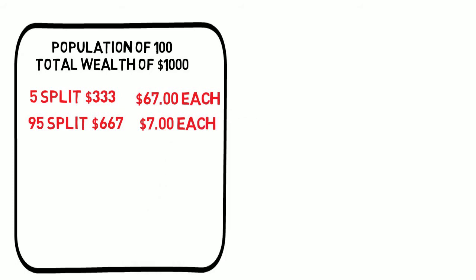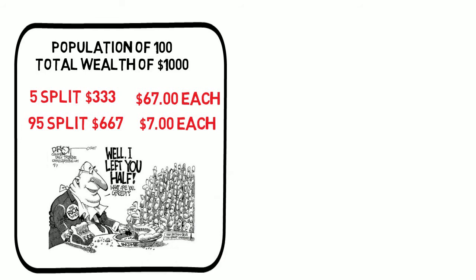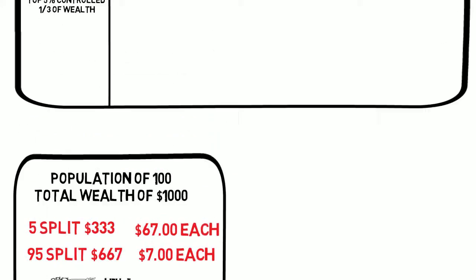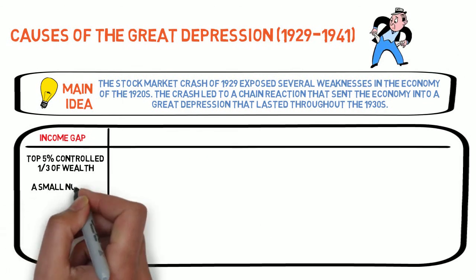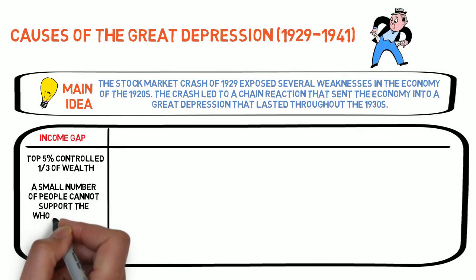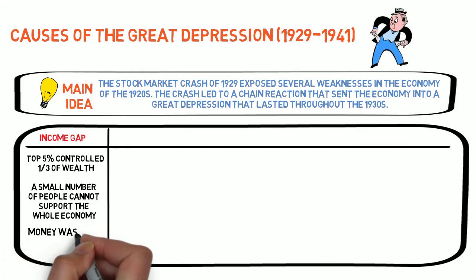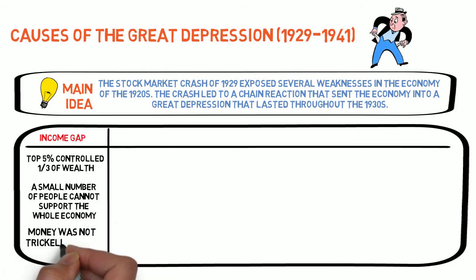The reason that this income distribution is problematic is because the top 5% of the population cannot spend enough money to support the entire economy. Think about this scenario: if you owned a car dealership, would you rather sell 5 people 10 cars each because they are super rich, or would you rather sell 95 people 1 car each? Some economists believe that a wealthy class can spend enough money to create jobs for everybody else — this is known as trickle-down economics. The problem, though, was that the money was not trickling down.